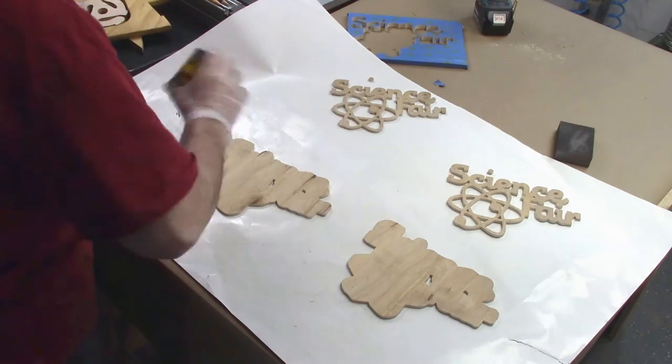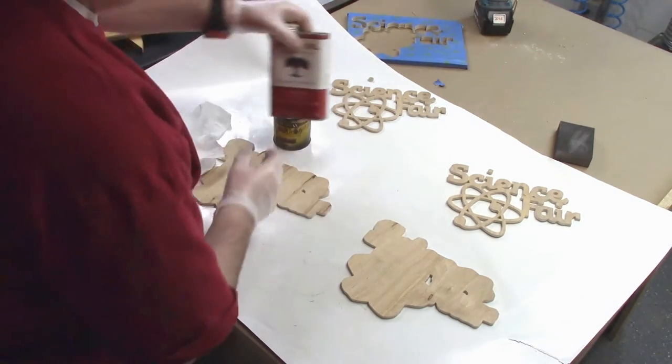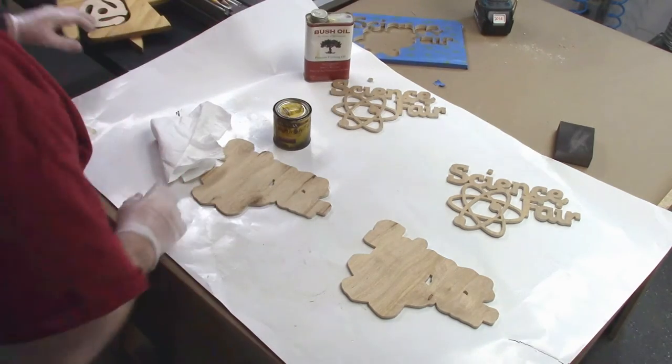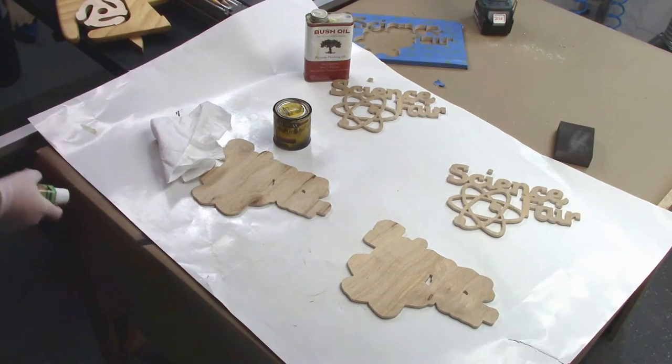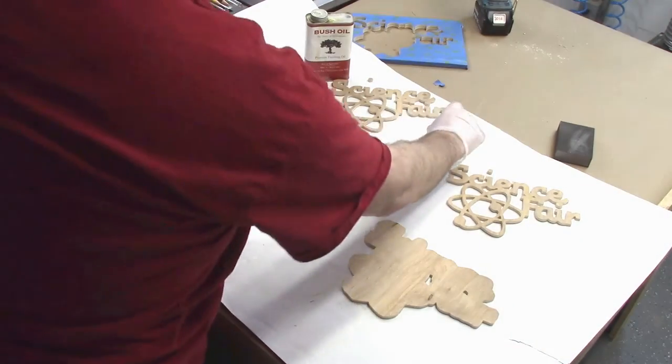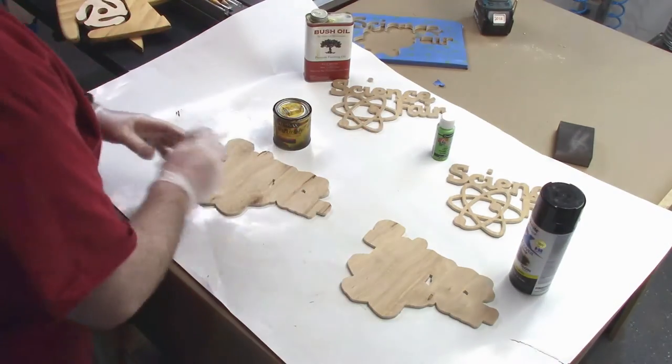The nice thing about stack cutting is you can make a couple of them to see which one you like better. So first one's going to have espresso with a bush oil finish on the top. Second one's going to be a black paint on the base and green on the top.